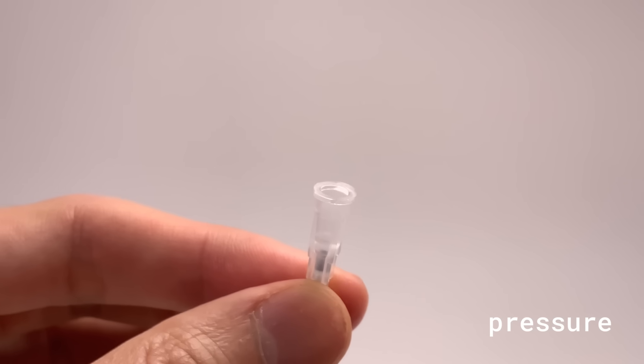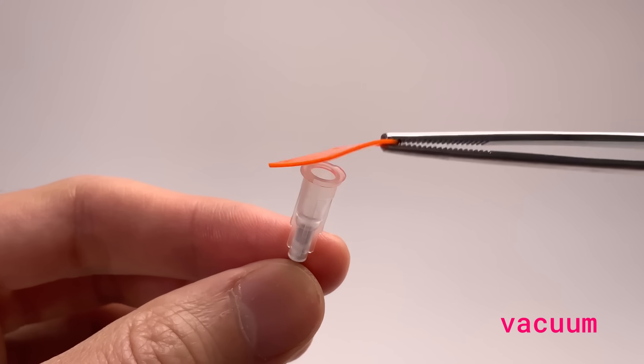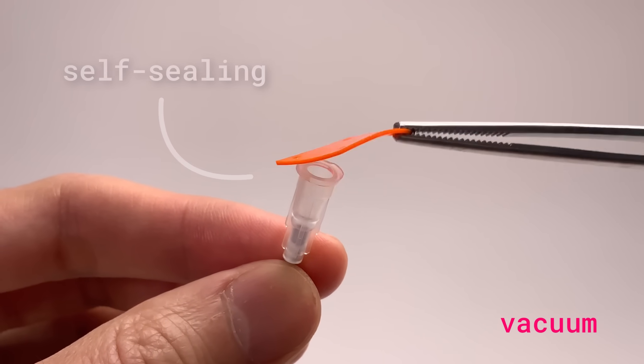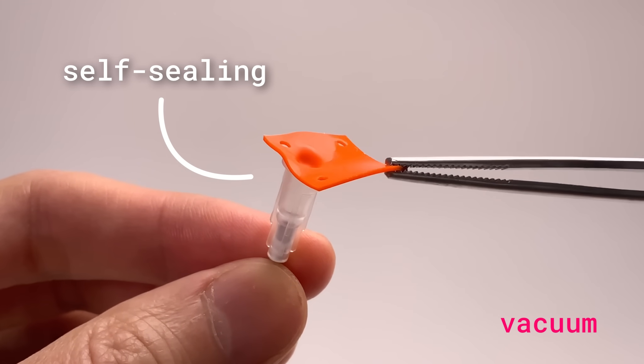And here's the first trick. Positive pressure blows the membrane open, but vacuum pulls it tighter. It's self-sealing. That's what makes the whole system work.